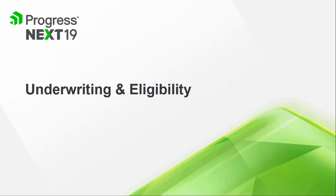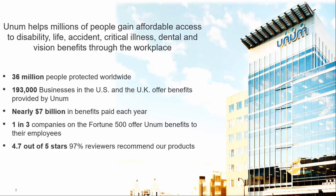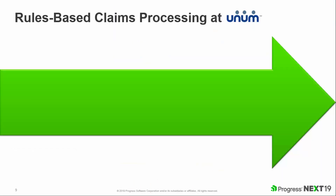Starting with underwriting and eligibility — the most ostensible use case for a rules engine — but our customers have been doing some pretty innovative things. Starting out with Unum. Unum is a large organization; if your employer doesn't provide insurance through them you may not have heard of them, but they are a Fortune 500 insurer, specifically for disability more than anything.